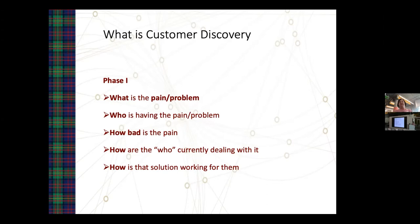After finding out how they're solving it now, ask: how's that working for you? On a scale of one to ten, you're looking for big pain scores of eight, nine, and ten, while current solutions rate one, two, or three. If the scores fall in the middle, even a good idea won't take off because the pain isn't bad enough or the current solution is just good enough that people stick with what they know.